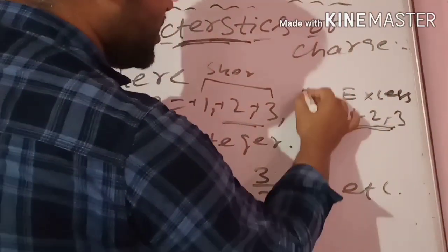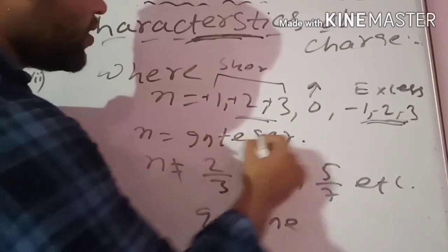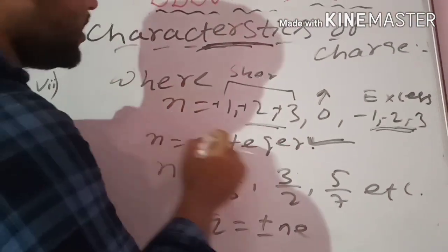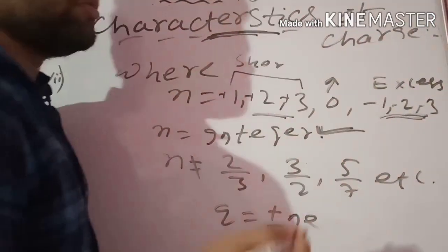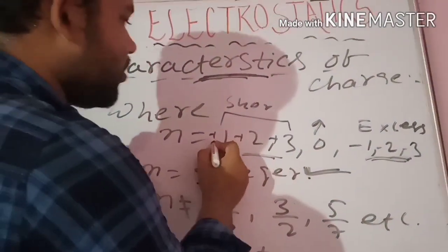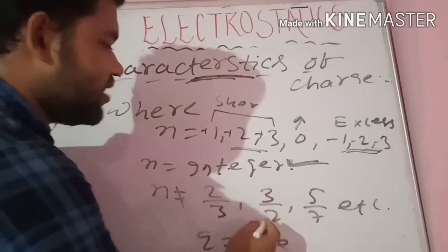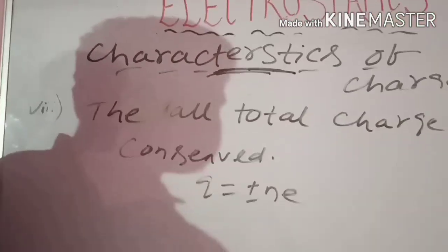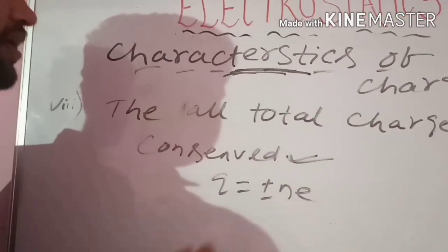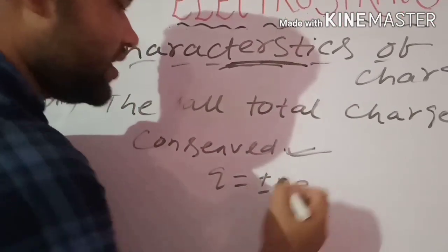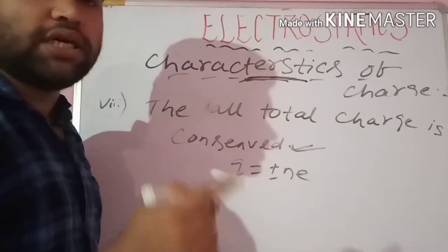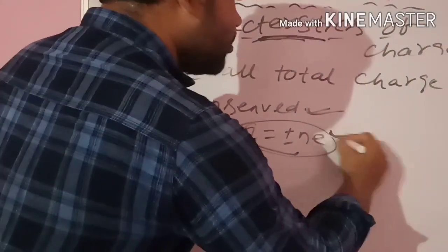If there is no electron deficiency or excess, the charge is zero. The value of n must always be an integer — 1, 2, 3 or 0, minus 1, 2, 3 — and never a fraction like 2 by 3, 3 by 2, or 5 by 7. If you have a shortage of electrons, you have a positive charge. If you have an excess of electrons, you have a negative charge. Total body charge is always plus, minus, or zero — it is always quantized.